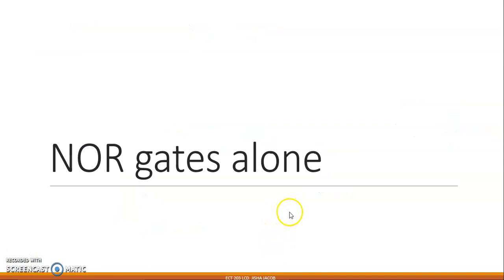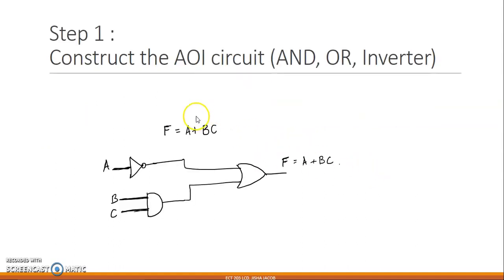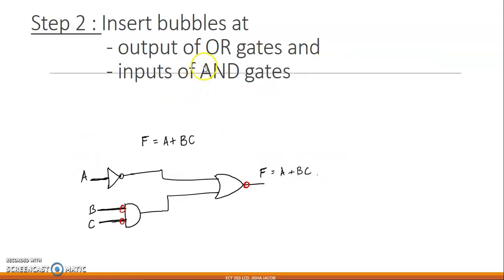Now let us proceed with the NOR gates alone circuit. This follows the exact same procedure as for NAND gates alone with a small twist. Using the same function A̅ + bc, we start with the AOI circuit. The difference is: for NOR, you insert bubbles at the output of OR gates and at the inputs of AND gates — opposite to the NAND case.